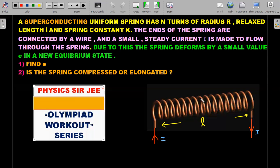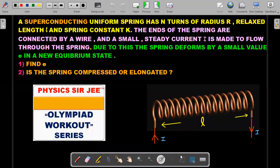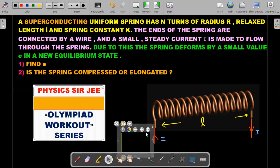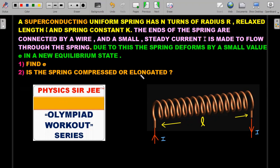A superconducting uniform spring has N turns of radius R, relaxed length L, and spring constant k. The ends of the spring are connected by a wire and a small steady current I is made to flow through the spring. Due to this, the spring deforms by a small value ε in a new equilibrium state, and the deformation could be a compression or elongation.